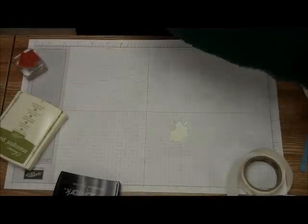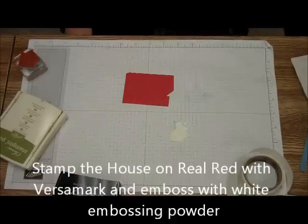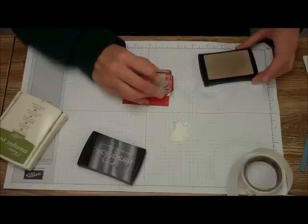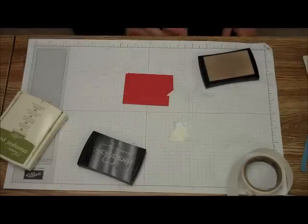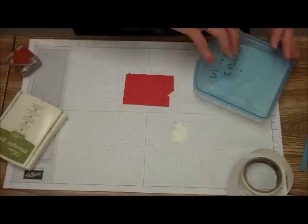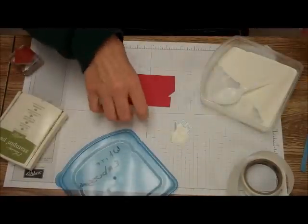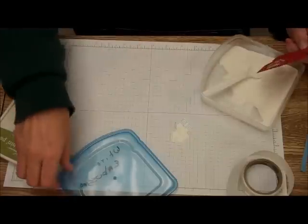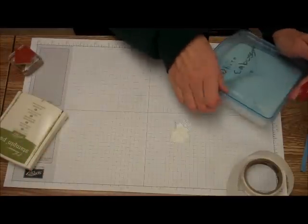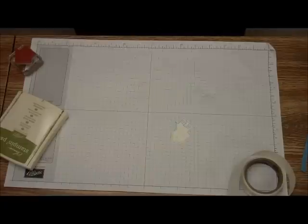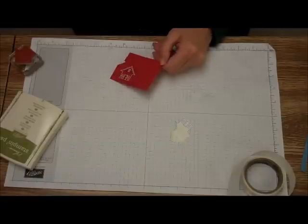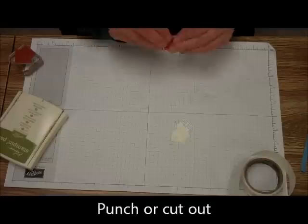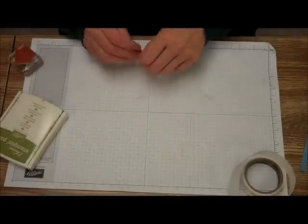Then what we're going to do is we're going to take the Real Red and the Versamark and we're going to stamp with the Versamark on the Real Red. And then we're going to put some white embossing powder on it. And then, again, you can use the What's Up Punch or you can cut it out. And I've already cut this out. So, we're going to put those aside for a second.